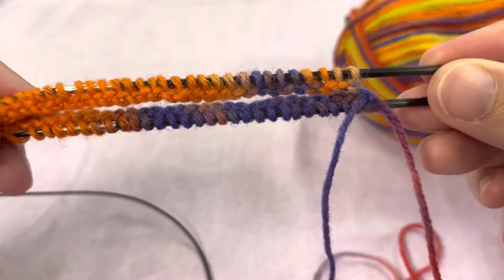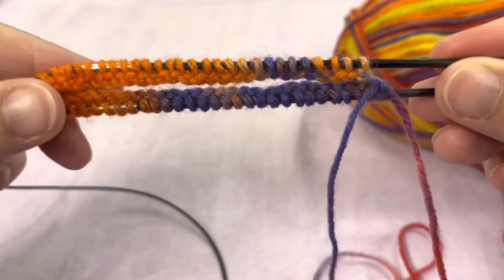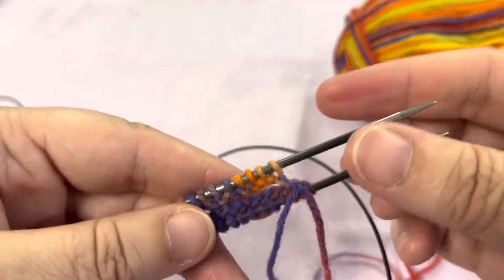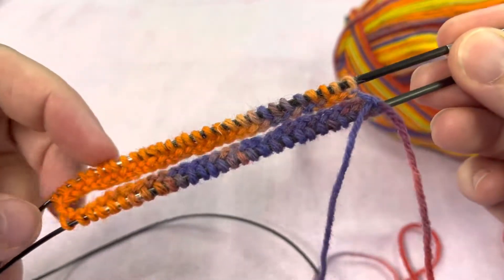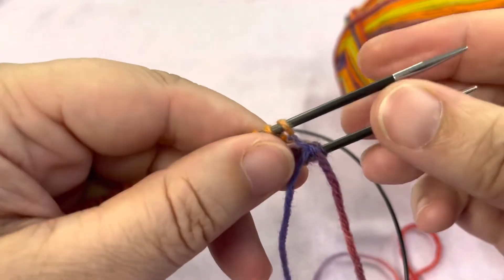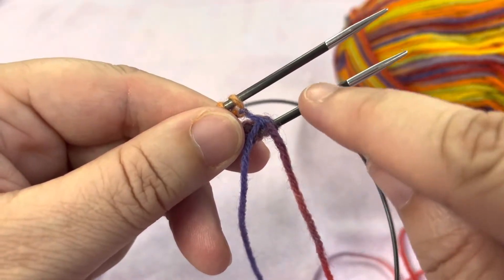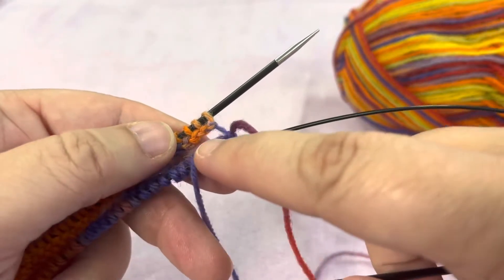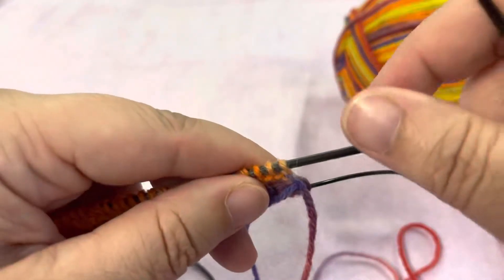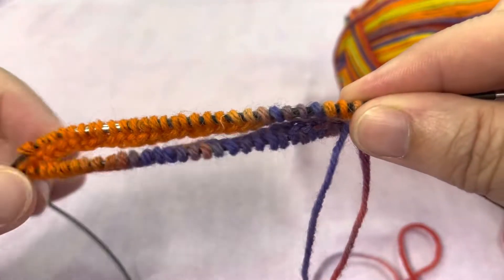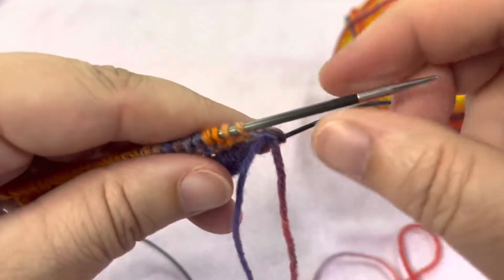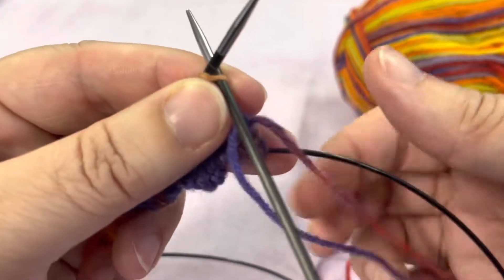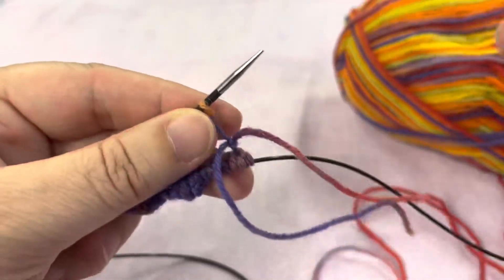Now what I want to do is begin doing the ribbing for the cuff of the sock. To do the magic loop, if you don't have experience with it already, we basically need to create our setup where we have a left needle and a right needle. Right now the stitches we want to do are on this top needle, but our needle that we want to knit with is still down here. So what we want to do is carefully pull that through. See, now the cord is holding all of those stitches. We're going to ignore the back ones and just knit the front ones.